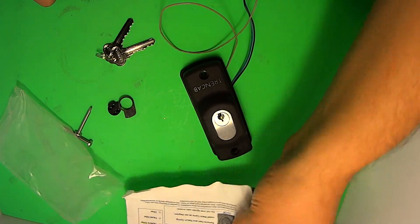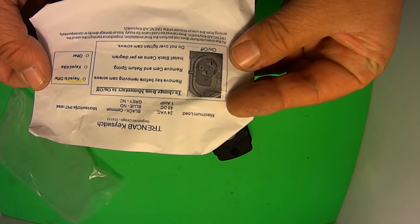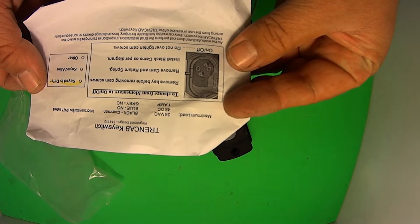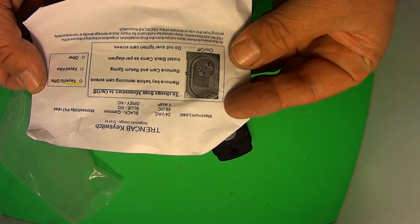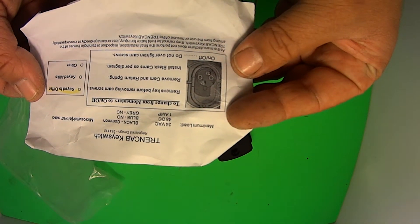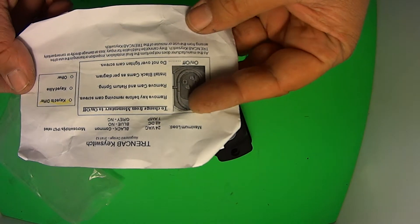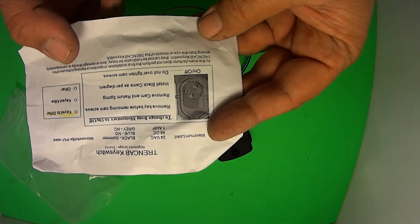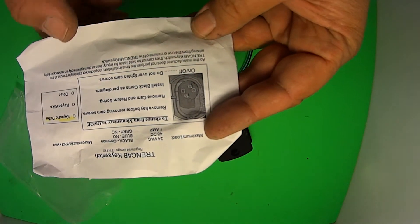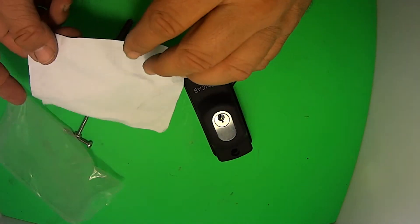The specifications are all on the paperwork included. Your maximum load is 24 volt at 1 amp, 48 DC. The black is the common, the blue is the normally open, the gray is the normally closed. It's IP67 rated, which means it's okay for being outside in the weather. This gives you the instructions for putting the permanently on or permanently off cam on the back. And that's basically all the instructions that are needed.